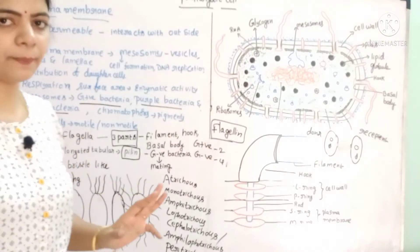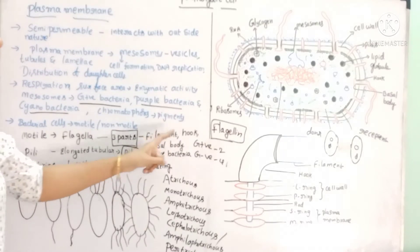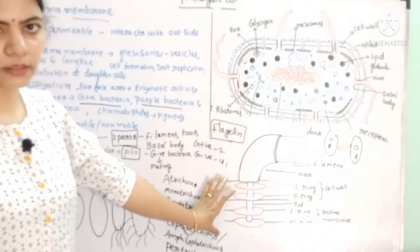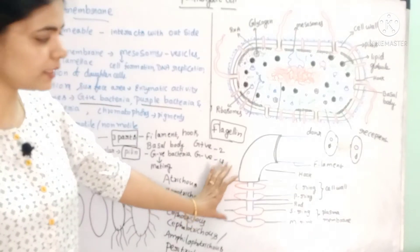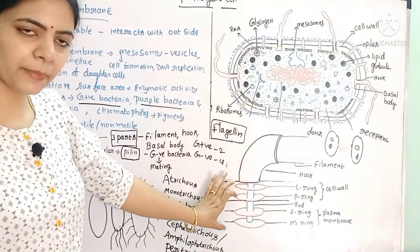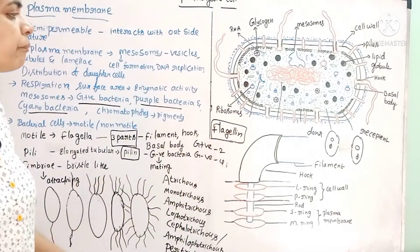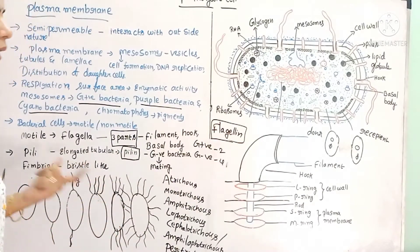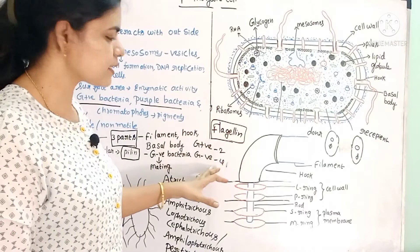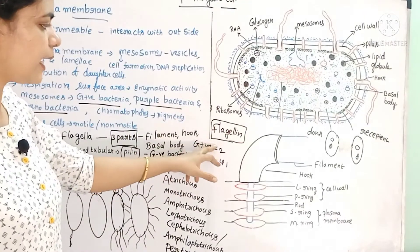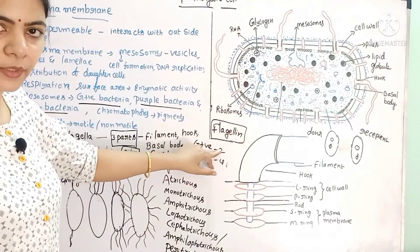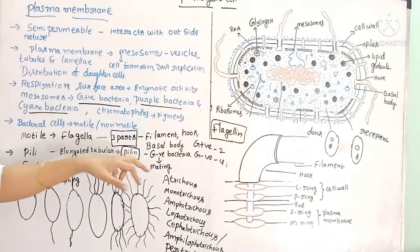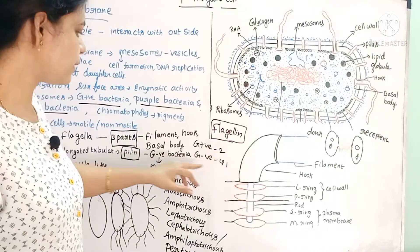Flagella have three parts: filament, hook, and basal body. The filament is a thin, hollow, tubular structure. It is made up of a special protein called flagellin.